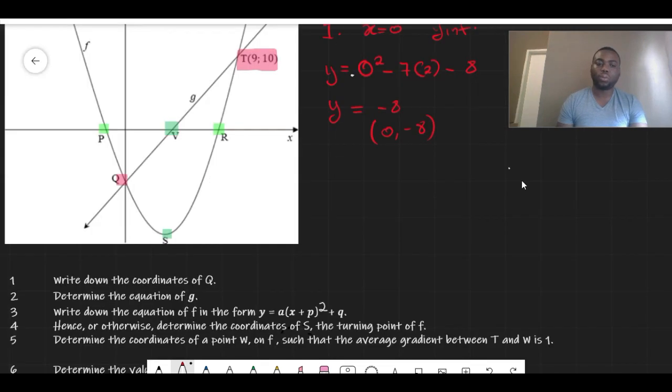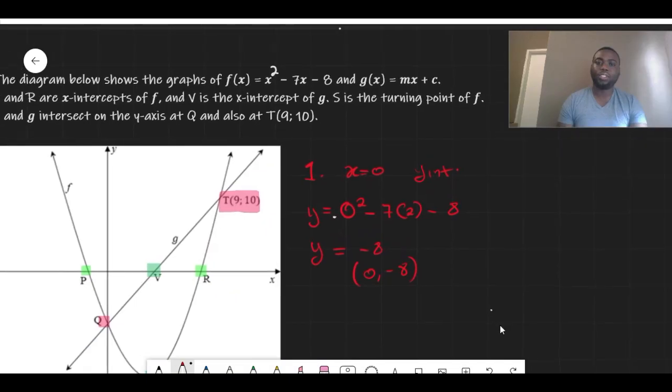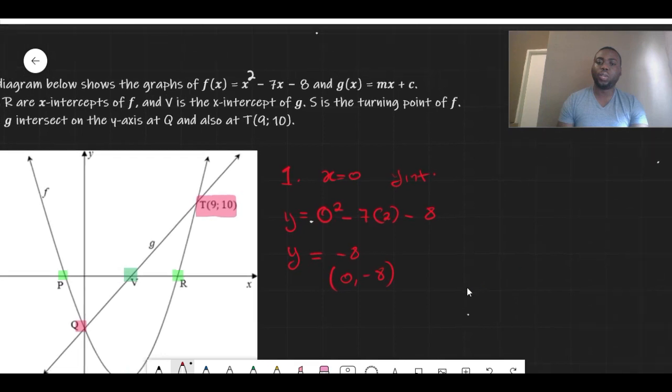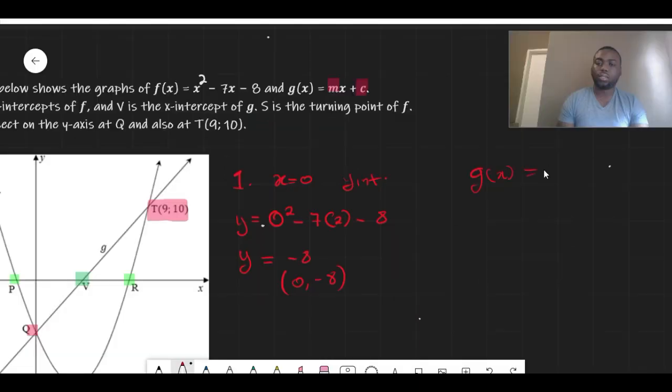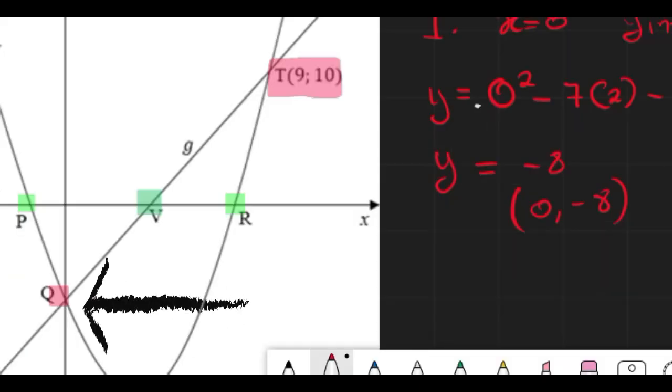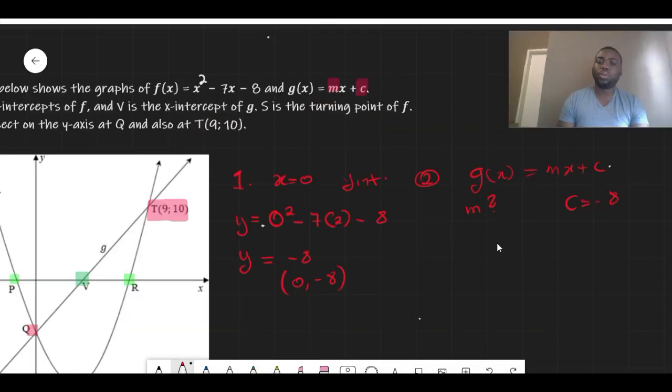Question two: determine the equation of g. Now g is our straight line equation, and whenever you want to get your equation of a straight line, you need your gradient and you need your y-intercept. Q is the y-intercept for both the straight line and the parabola. Our c is already -8.